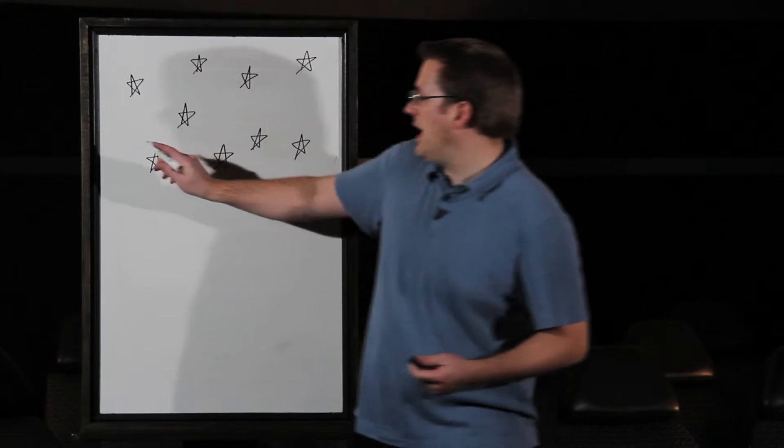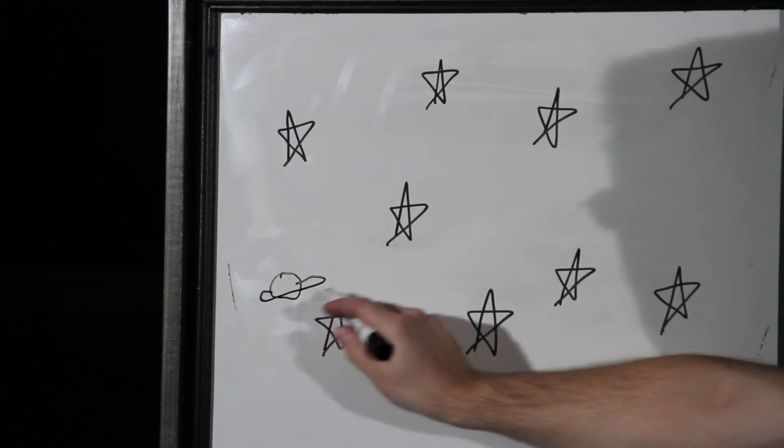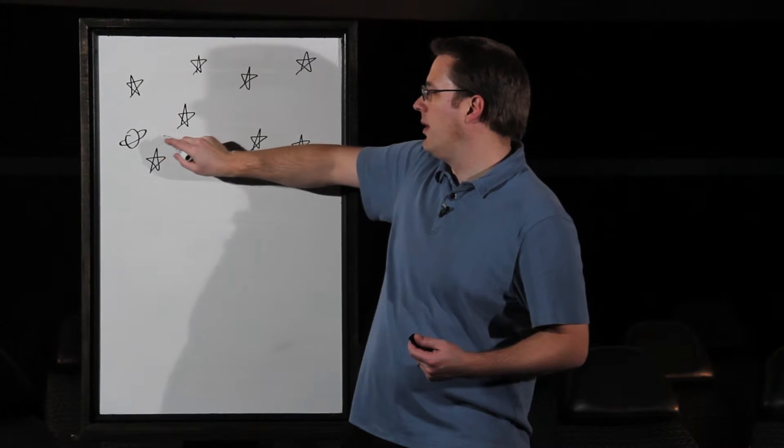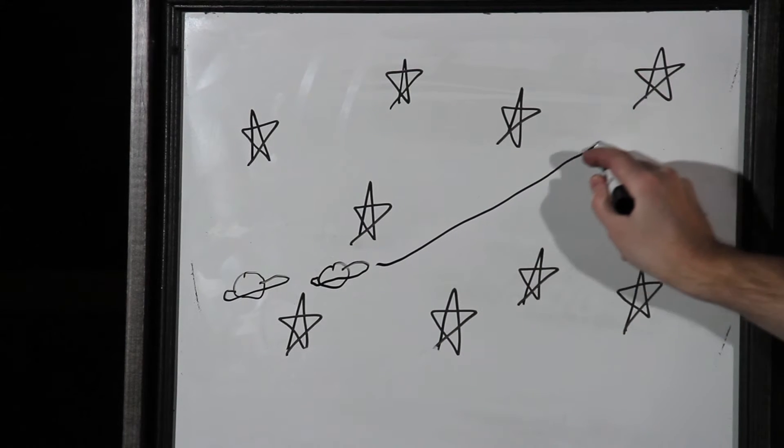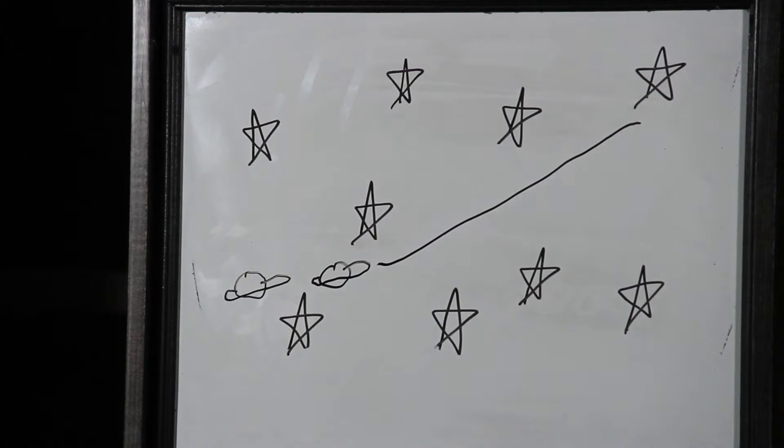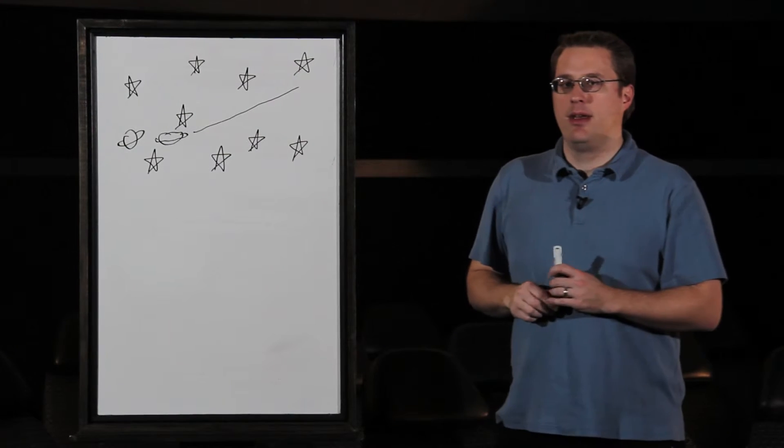Still today you can watch this. You can take Saturn and watch it any given night with its rings and it will slowly move one night here and the next night here. It will slowly move along this path night after night after night. If you watch it, all the stars will sit exactly still while Saturn moves along that path. So the ancients knew about this.